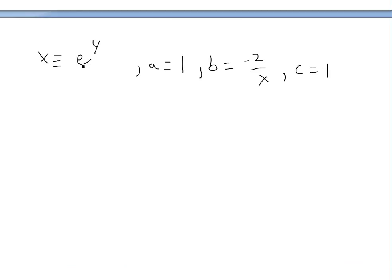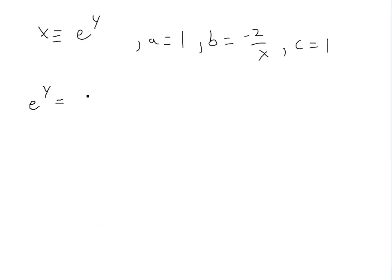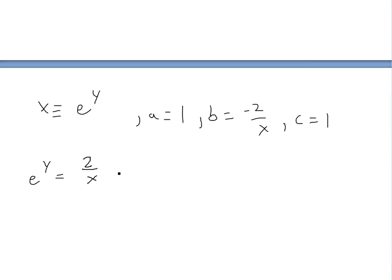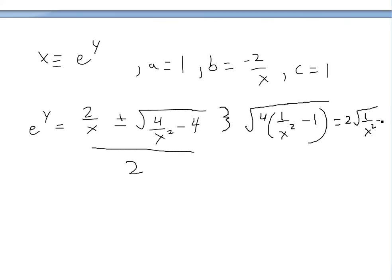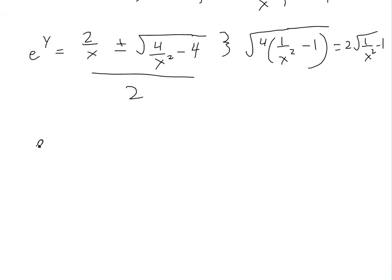So we solve: e to the y equals negative b, which gives 2 divided by x, plus or minus the square root of b² minus 4ac. b² is 4 over x², and 4ac is 4 times 1 times 1 equals 4, all divided by 2. We can factor out the 4 inside the square root to get 4 times (1 over x² minus 1), and taking the square root of 4 gives 2. So e to the y equals 2 over x plus or minus 2 times the square root of 1 over x² minus 1, all divided by 2.